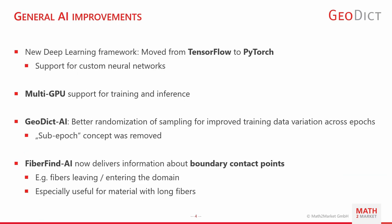Now some general improvements that we did. We switched the deep learning framework from TensorFlow to the more modern PyTorch framework, and at the same time we added support for custom neural networks. So if you have a neural network written in PyTorch, you can essentially plug it into GeoDict and use it there. You can train your own networks in GeoDict and then apply them to your own images.